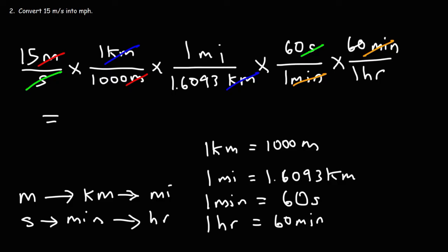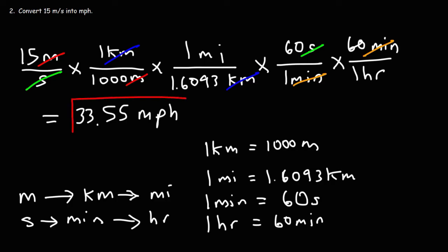So let's do the math. It's going to be 15 divided by 1,000, then take that result and divide it by 1.6093, and then multiply that by 60 times 60. You should get 33.55 miles per hour. So now you know how to go backwards from meters per second to miles per hour.